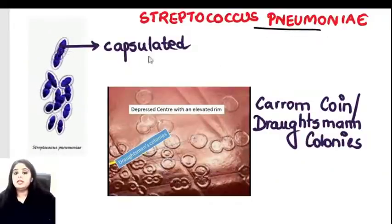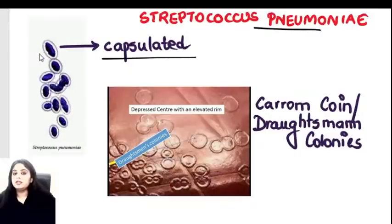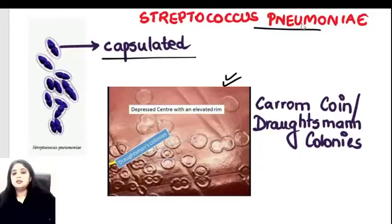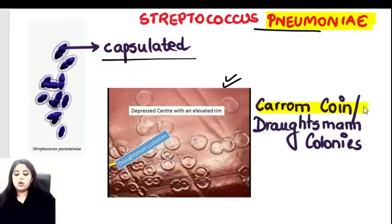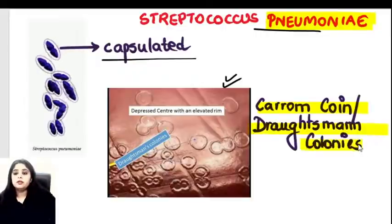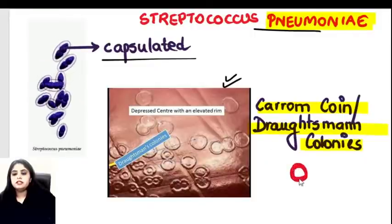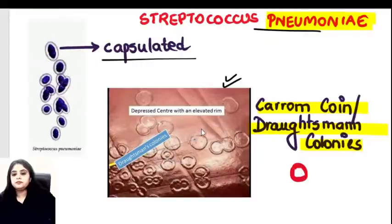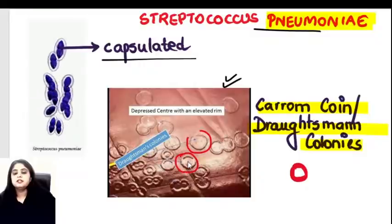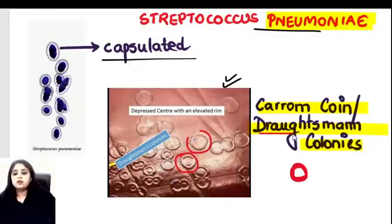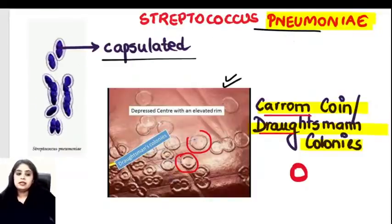Streptococcus pneumoniae is a capsulated organism showing very classical colonies called draughtsman colonies or carom coin colonies — the periphery is elevated and the center is depressed. This characteristic appearance is what you see in S. pneumoniae culture morphology.